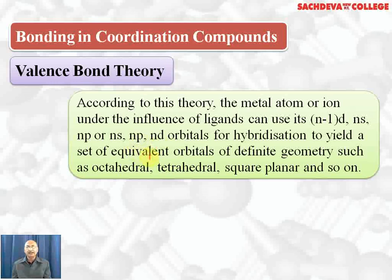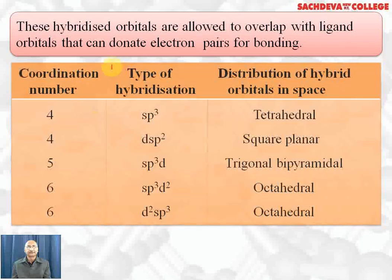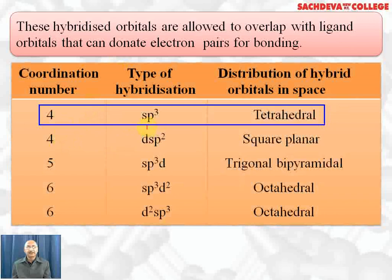Hybridization leads to the formation of an equivalent set of orbitals with a definite geometry, such as octahedral, tetrahedral, square planar, and so on. These hybridized orbitals are allowed to overlap with the ligand orbitals that can donate a lone pair of electrons for coordinate bond formation.